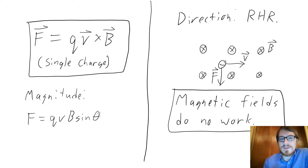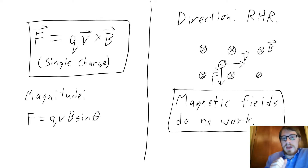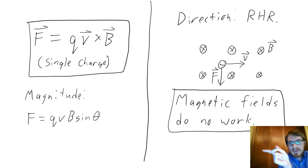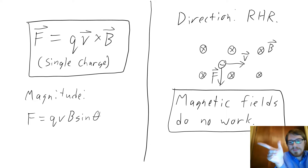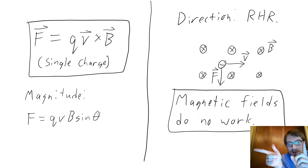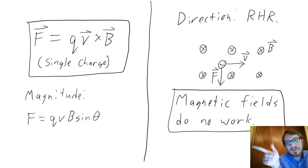The X in the circle looks like the fletching or feathers on an arrow — that's a vector pointing into the board. To find the direction of the force on this negative charge, take your right hand: index finger in the direction of the velocity to the right, the rest of your fingers in the direction of the magnetic field into the page. Your thumb gives an upward direction, but because we have a negative electric charge, the actual force is the opposite — downward.